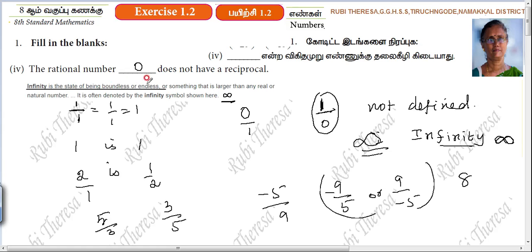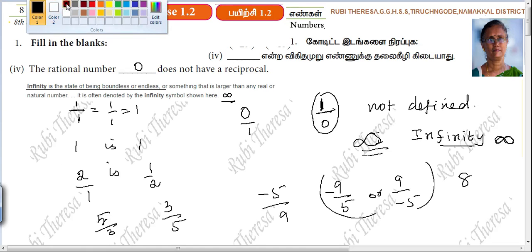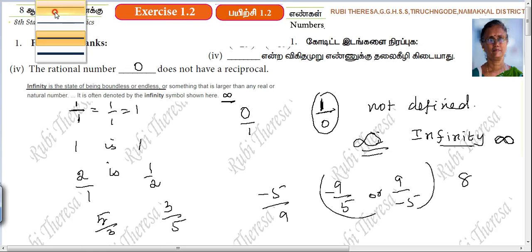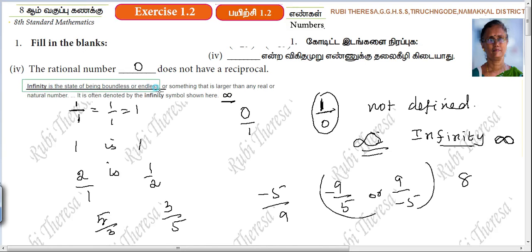Infinity is the state of being boundless or endless. It is a misconception that infinity is a number — it results from 1 divided by 0.